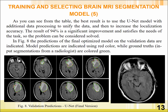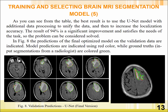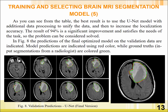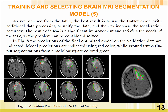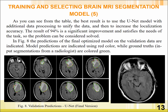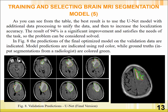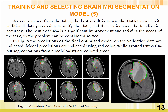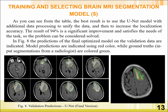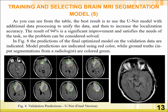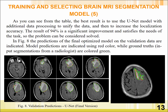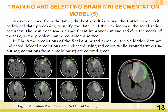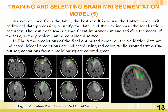As you can see from the table, the best result is achieved using the UNET model with additional data processing to unify the data and then to increase localization accuracy. The result of 94% is a significant improvement and satisfies the needs of the task. So, the problem can be considered solved.